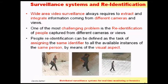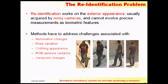We need to assign the same identifier to the same person wherever they are in a town, from whichever camera they're seen, from whichever point of view. Since we are dealing with cameras — images — we can only work on the exterior appearance of a person. No biometric features can be used: no iris scan, no DNA, nothing.